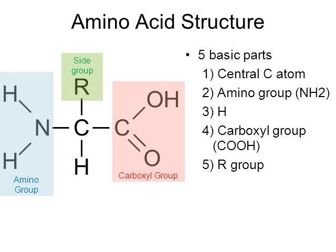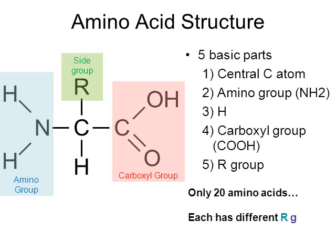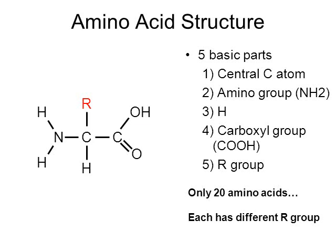The last atom attached to our central carbon is what we simply call the R group, or side group. R doesn't stand for anything on the periodic table — the joke is that it stands for 'the rest of the molecule.' There are 20 different amino acids, and every single one has a different R group. For example, the amino acid glycine has an R group that is simply a hydrogen atom.